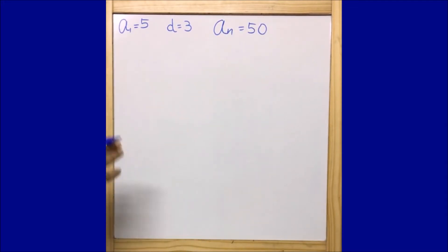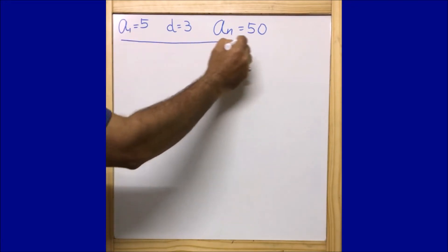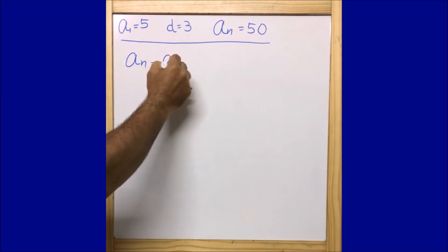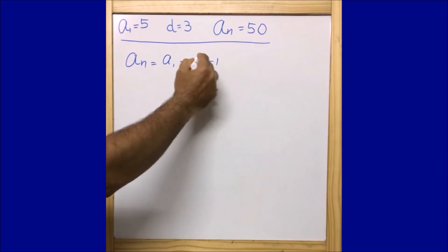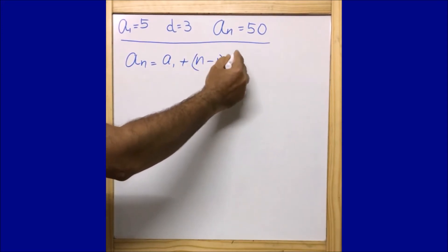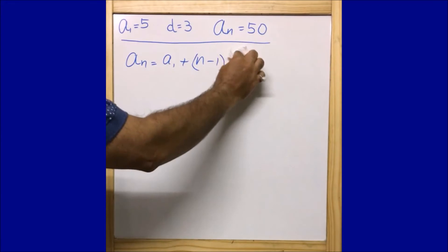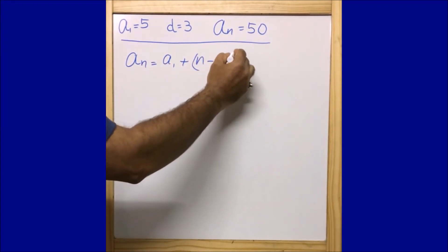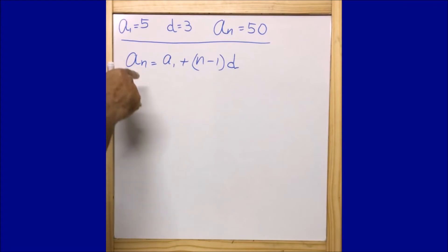With these values, we are going to move ahead and find the value of n and Sₙ. We are going to use our formula: aₙ equals a₁ plus (n minus 1) times d. This is the formula with the help of which we are going to find out the missing values.